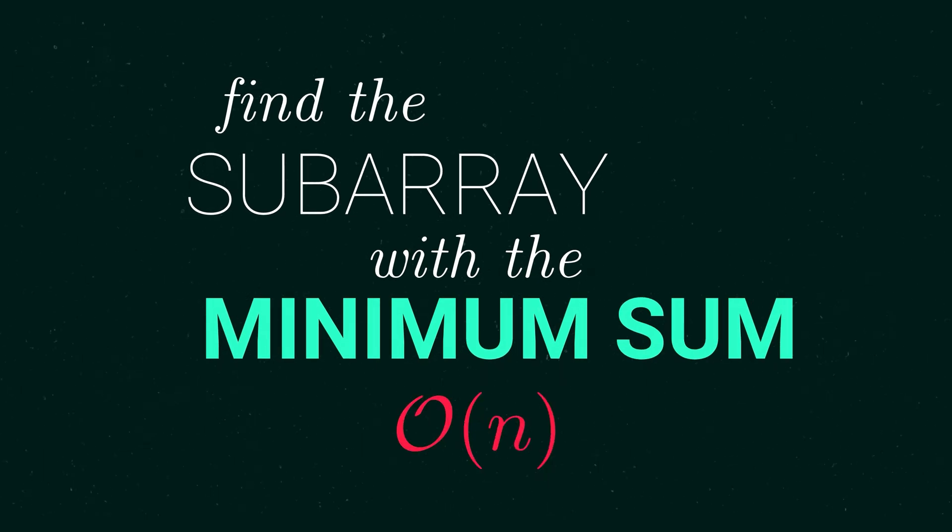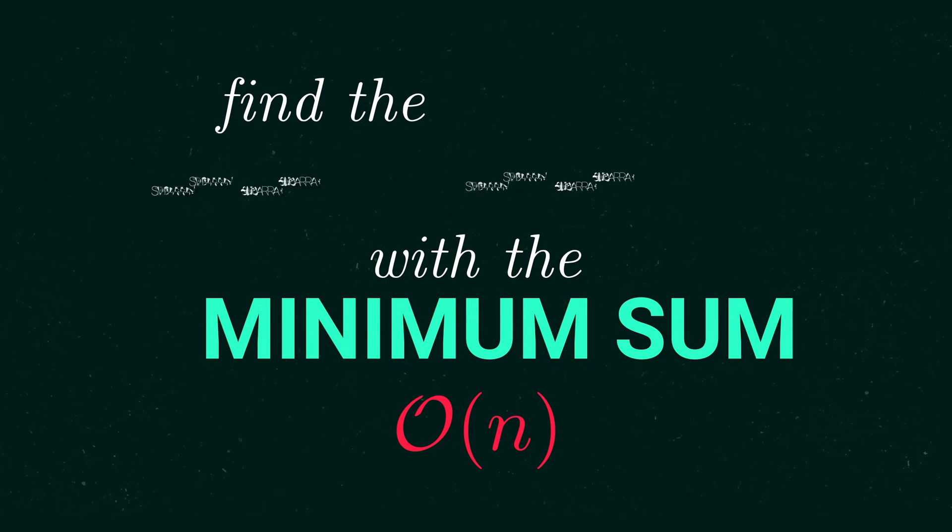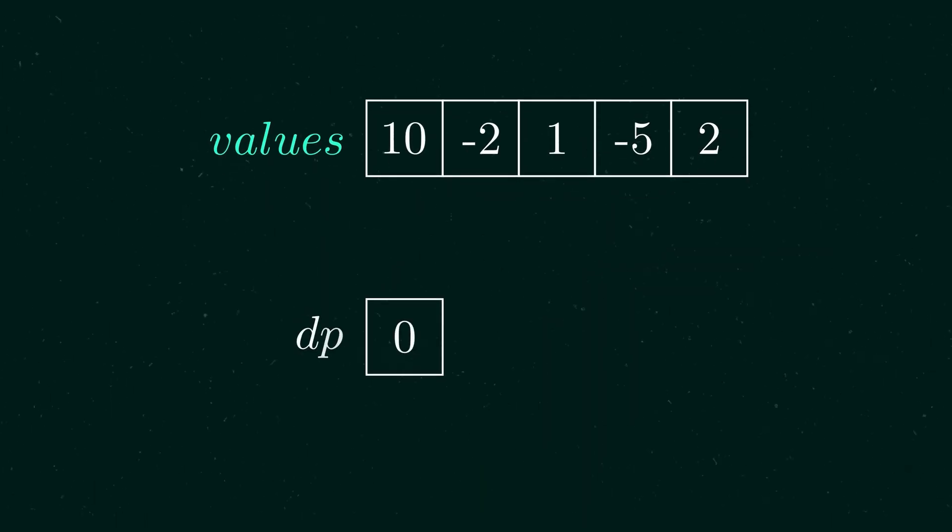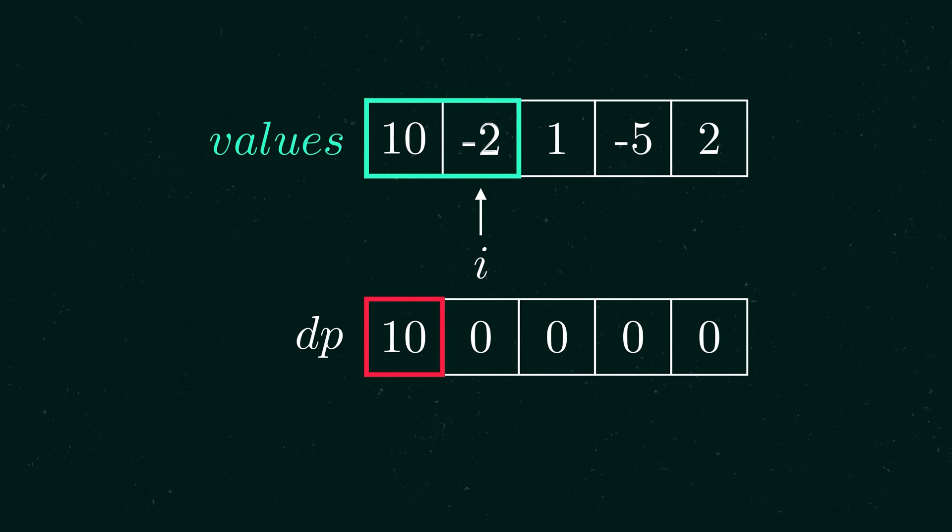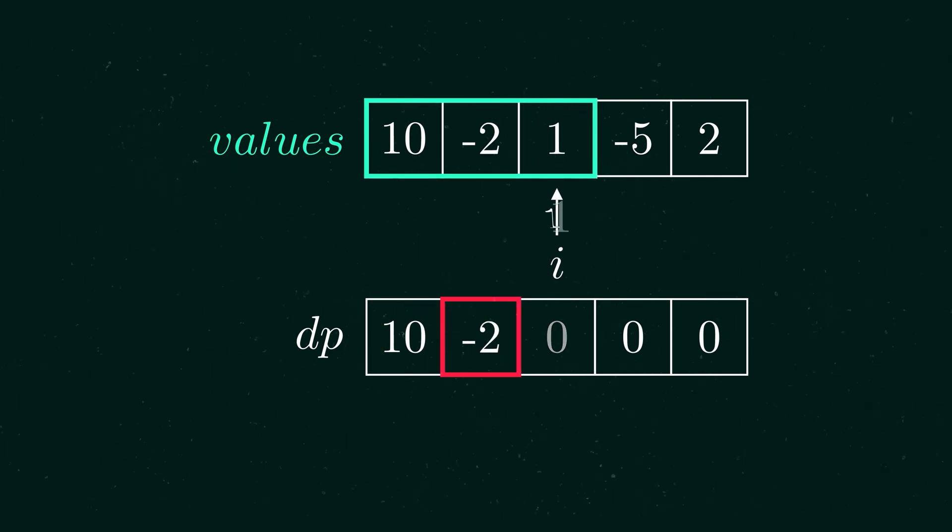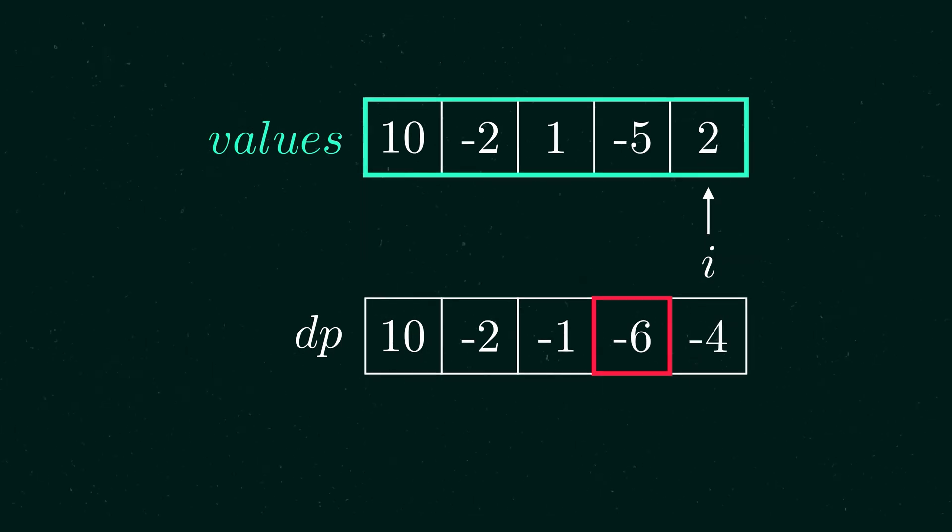To get to this solution, we have to break the problem down into smaller pieces. We'll name the initial array 'values' and create a new array called 'dp', which will contain the minimum sums of each subarray where the element at index i is the last in that subarray. So the dp at that index corresponds to the sum of the minimum subarray ending at that index.